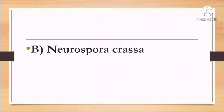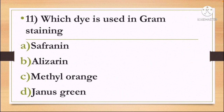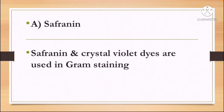Next question: which dye is used in gram staining? Option A: Safranin, Option B: Alizarin, Option C: Methyl orange, and Option D: Janus green. The correct answer is Option A, Safranin. Safranin and Crystal violet dyes are used in gram staining.